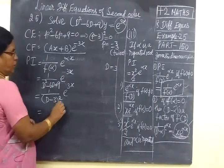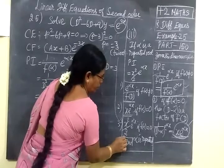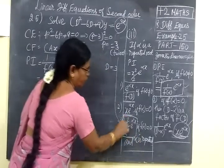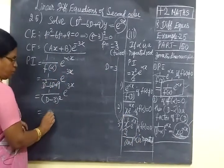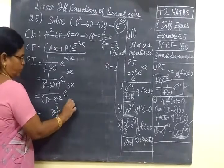So this is equal to... Particular integral is x² by 2 e^(αx). So this is equal to x² by 2 e^(3x).